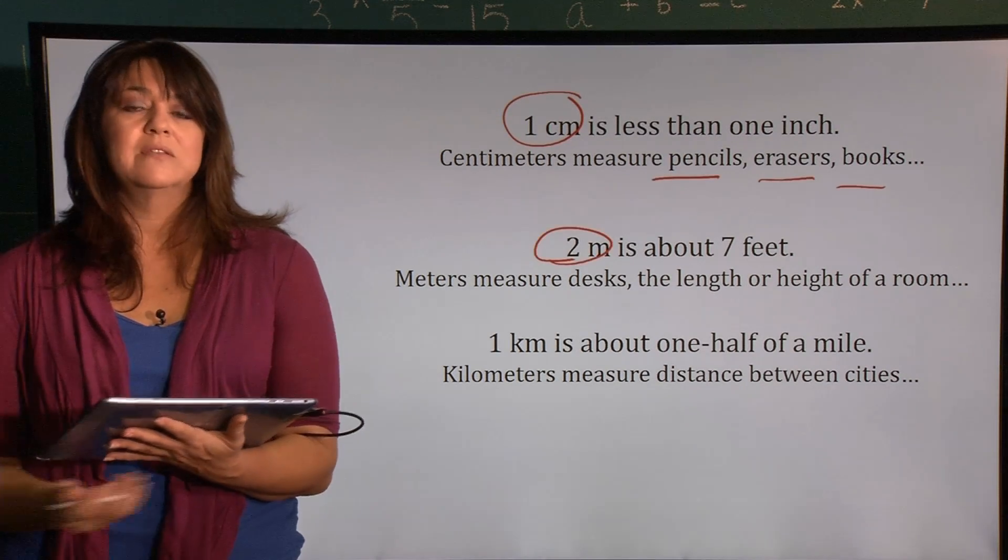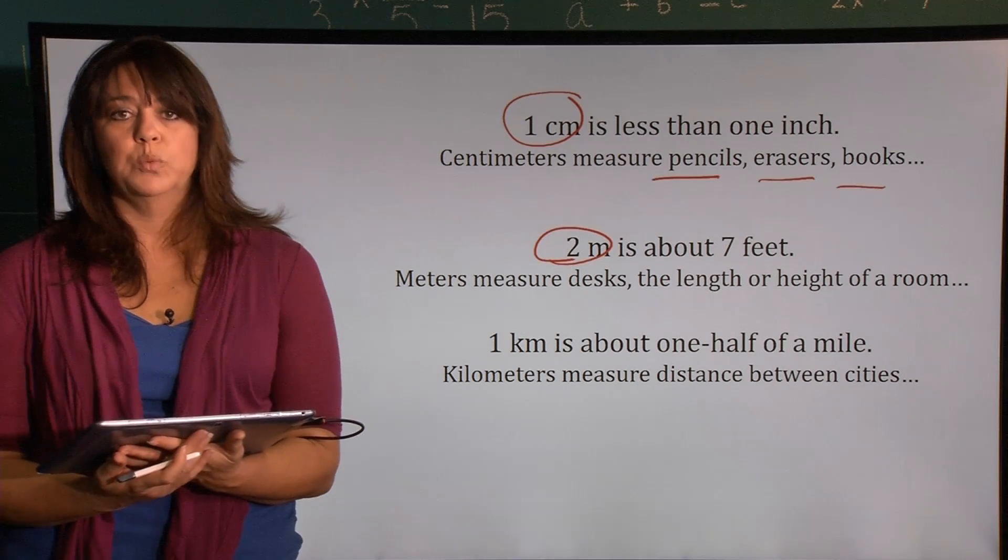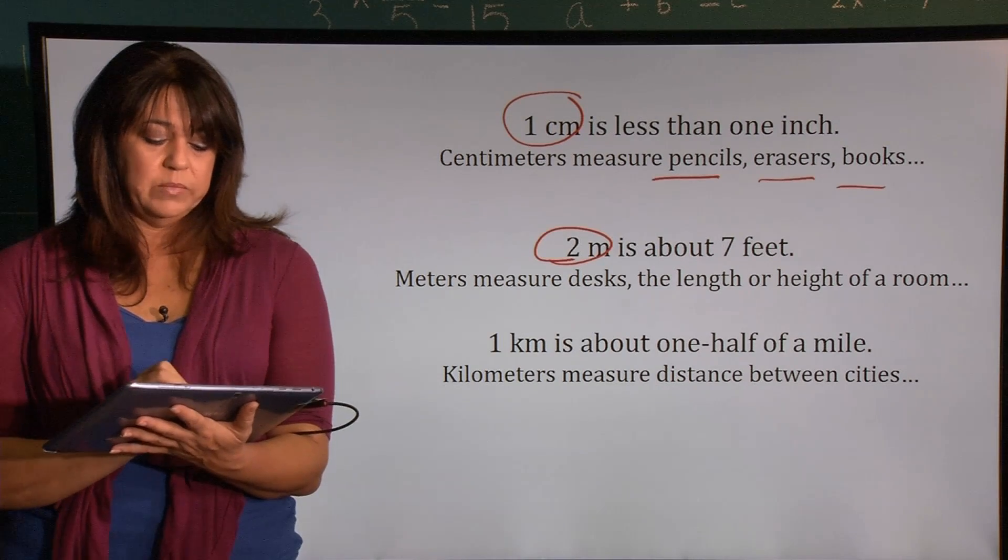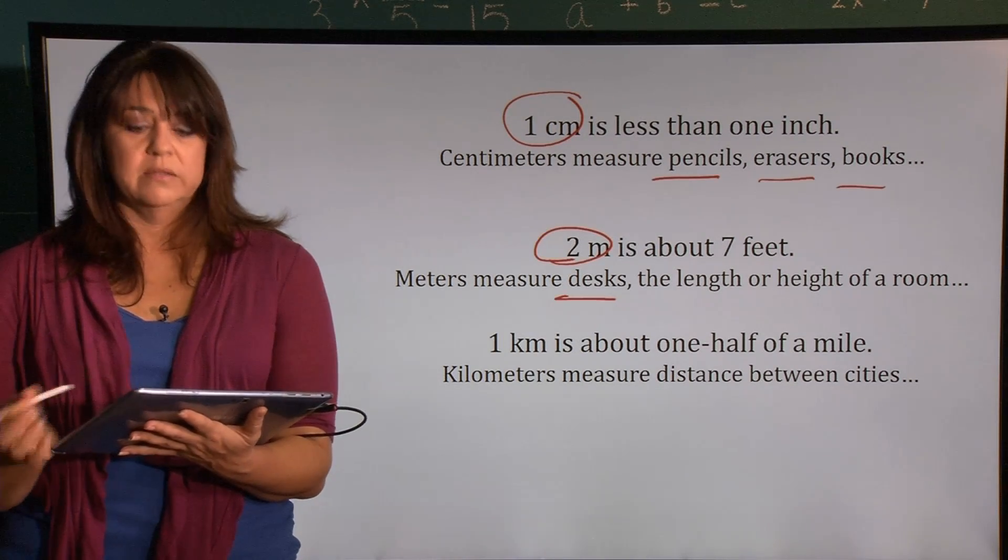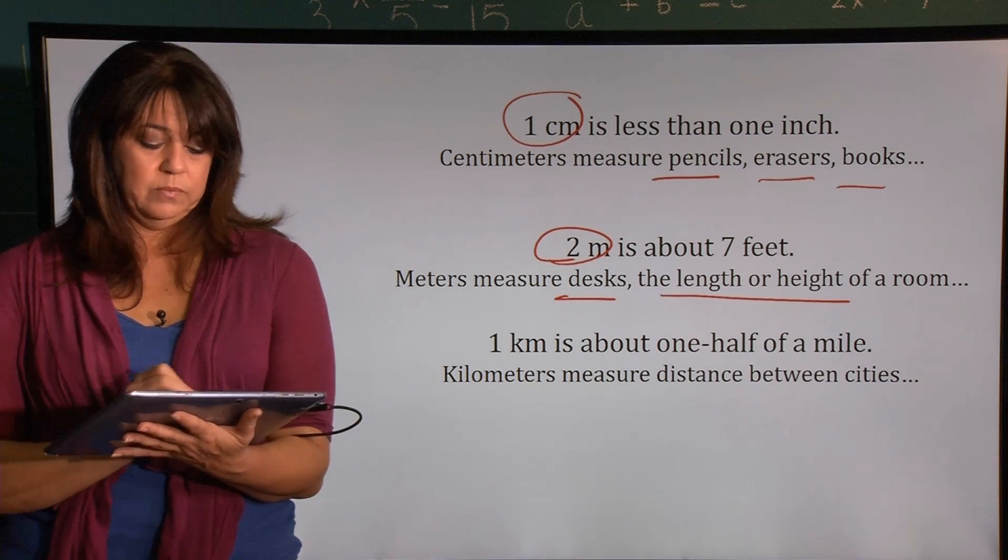Two meters is about seven feet, which is taller than the average person. So two meters is a little taller than the average adult. Meters would be used to measure things like furniture or the length or height of a room.